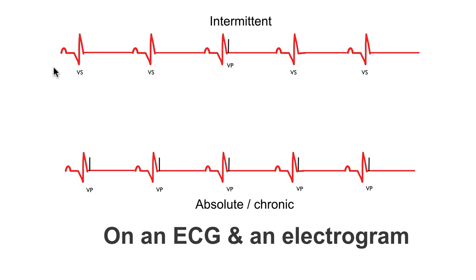In this example, the pacemaker is sensing the atrial depolarization. It starts its AV delay and then the intrinsic natural depolarization of the ventricles occurs. The pacemaker sees this and registers it as a V-sensed event. The same occurs on the following heartbeat.